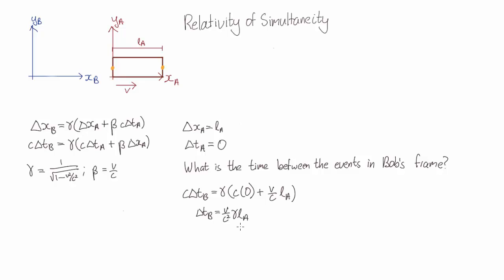Or, using what we know about length contraction, LA equals LB on gamma, v over c squared LB.